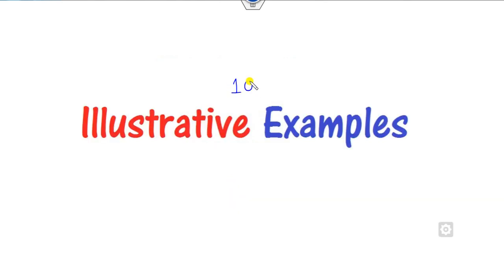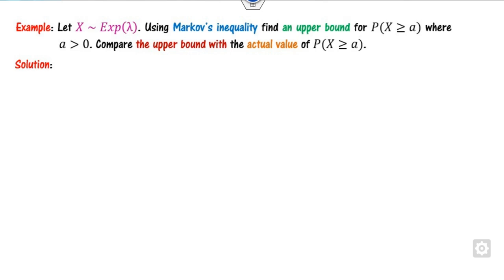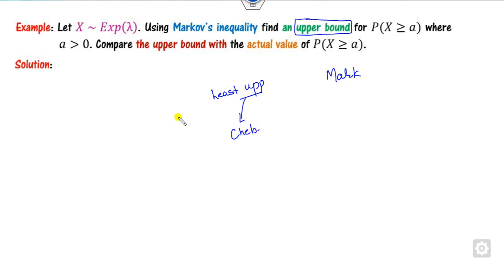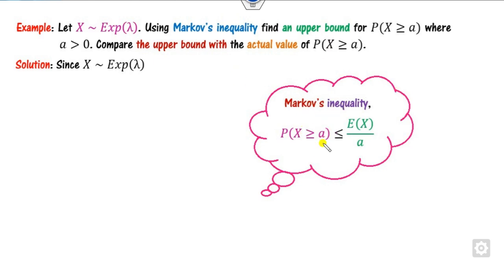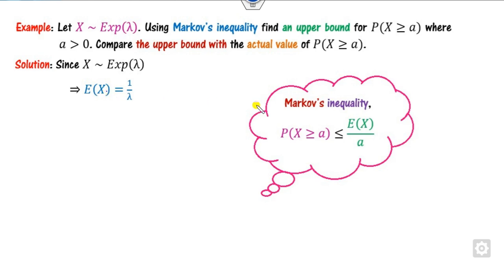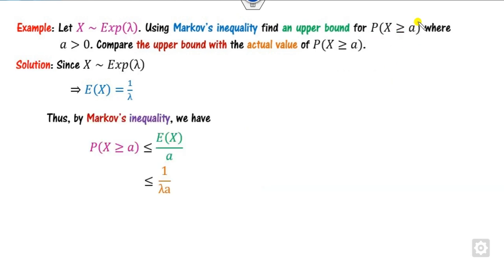To understand Markov inequality, I will explain 10 examples, each solvable within a minute, suitable for competition exams or theory class. In the first example, you need to find only the upper bound, so apply Markov inequality. X follows an exponential distribution. The only thing needed is the expected value, which for the exponential distribution is 1/λ. Substitute this value into P(X > A) ≤ E[X]/A to get the required answer.